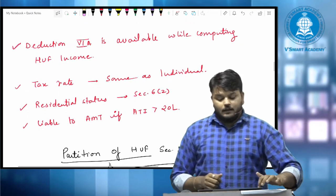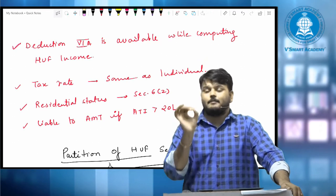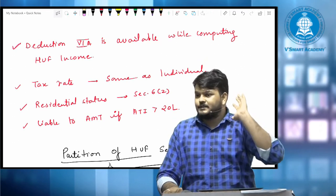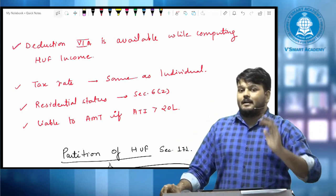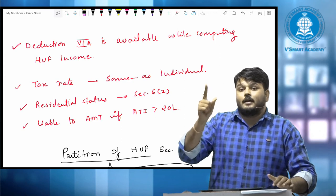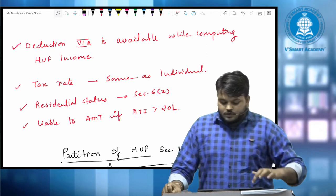While computing the income of H.U.F., deduction under Chapter 6A is available. Tax rate is just same as like individual. Residential status of H.U.F. is computed as per 6A of Section 2, and H.U.F. is also liable to AMT if ATI, adjusted total income, exceeds 20 lakhs. Yes or no?